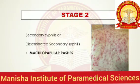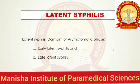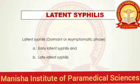There is one more stage of syphilis called latent syphilis. This is the stage where the disease enters into a dormant or asymptomatic phase. Latent syphilis can be further divided into early latent syphilis and late latent syphilis.